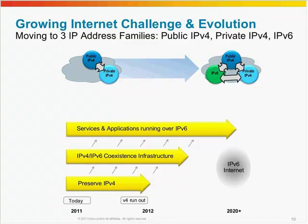If you ask at which arrow or stage we are at today, the answer is it depends on which market you are in, what your applications are, what your needs are, and what region you are in. These three arrows also correspond to the Cisco IPv6 transition marketing terms: preserve, prepare, and prosper. Initially, people will try to preserve, then they'll prosper with v4 and v6, and then they'll deploy IPv6 in their applications and services.